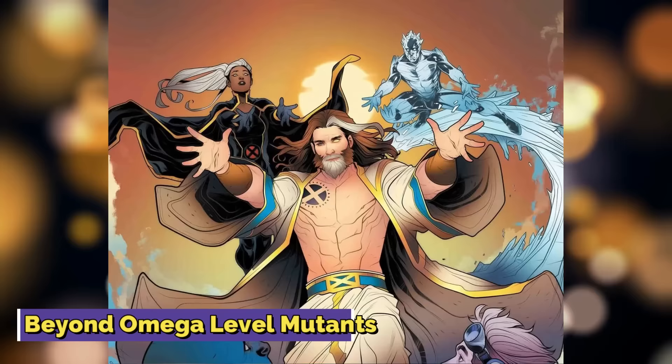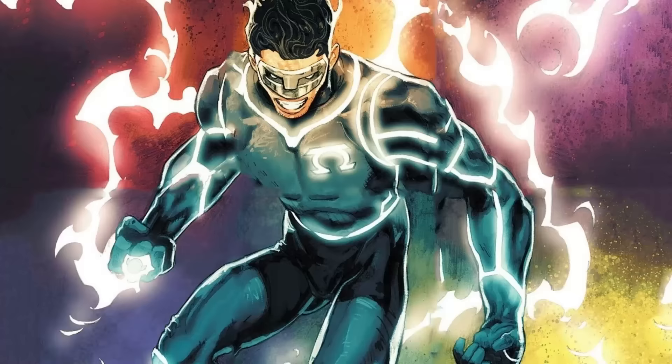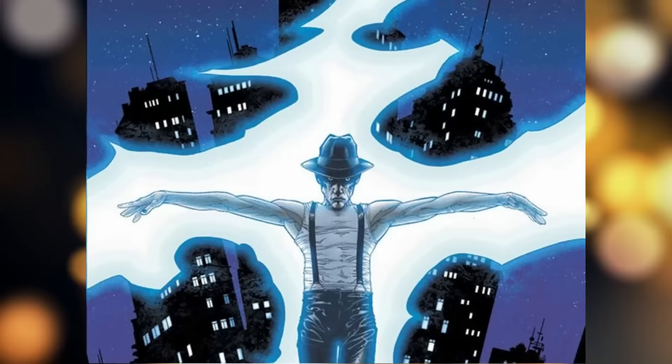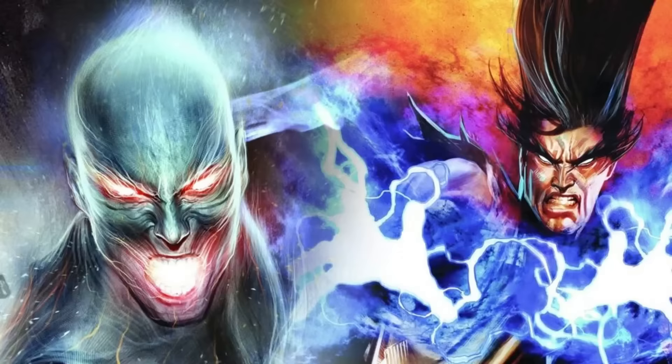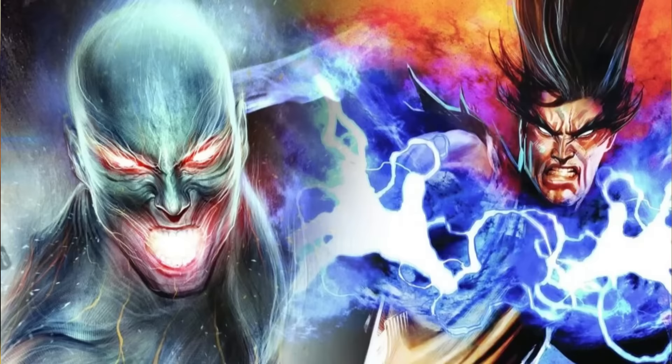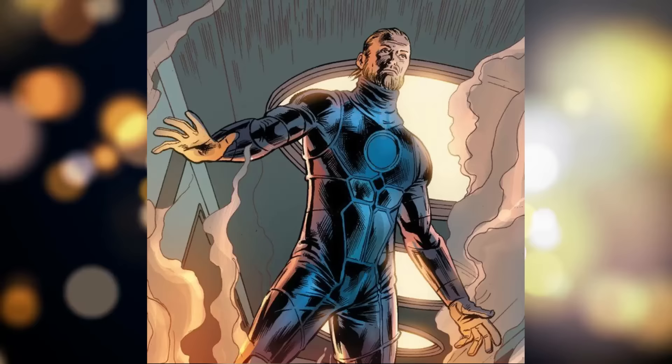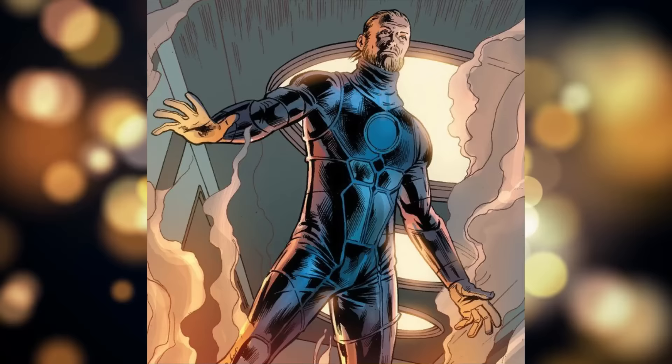Beyond Omega Level Mutants. The term beyond Omega-level is slightly confusing and does not really define any specific power level. The mutants stated to be beyond the Omega-level were marked as being superior to it. Omega-level mutants seemingly do not have an upper limit of their power, and hence bringing in beyond the Omega-level is like adding one to infinity, which still gives the result as infinity. However, it has been observed that in most cases Omega-level mutants can impact the world, while beyond Omega-level mutants can cause effects on a universal level. The Mad Celestials first used the term from an alternate reality to describe Franklin Richards, who stood toe-to-toe with them.